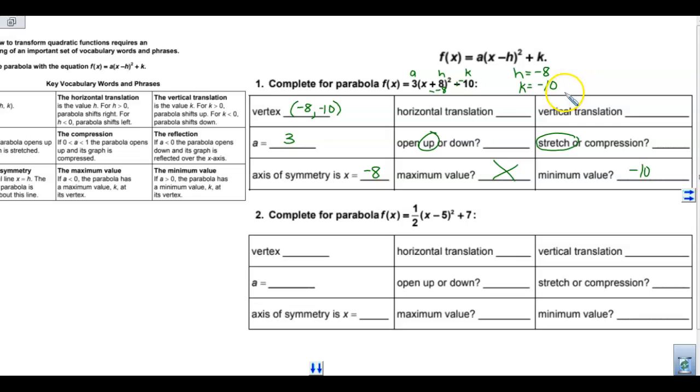All of this, we got from up here. Let's talk about the horizontal and vertical translation. Remember, if h is greater than 0, and h is negative 8, so it's actually less than 0. Because it's less than 0, it shifts left. So it's going to translate left. Vertical, k is negative 10, so since k is less than 0, it's going to shift down. All this information came from this equation. We didn't have to draw the parabola or anything. We were able to just see what we need to from here.